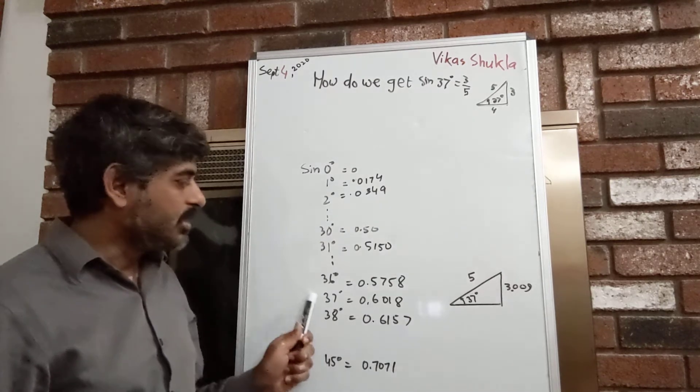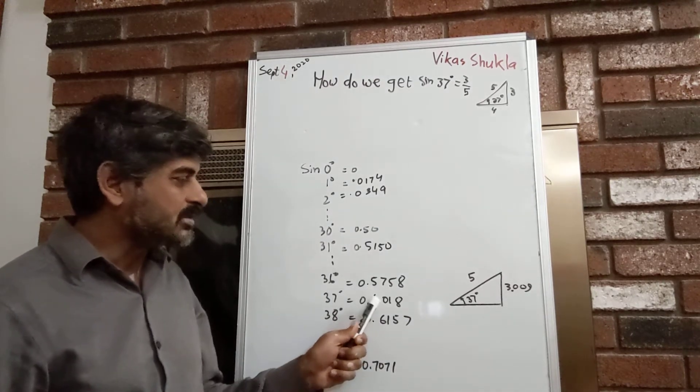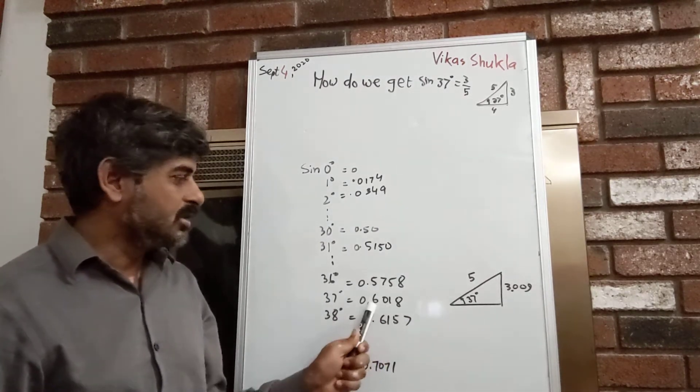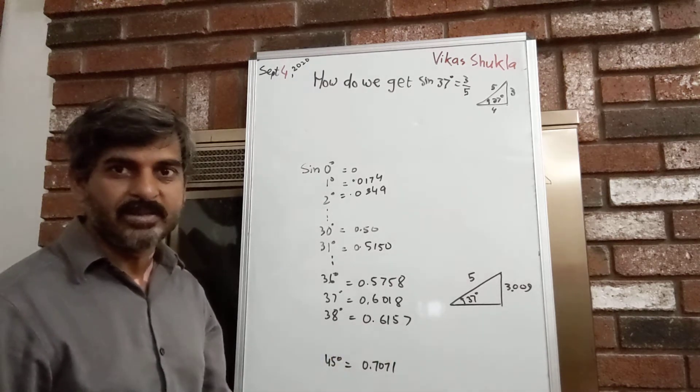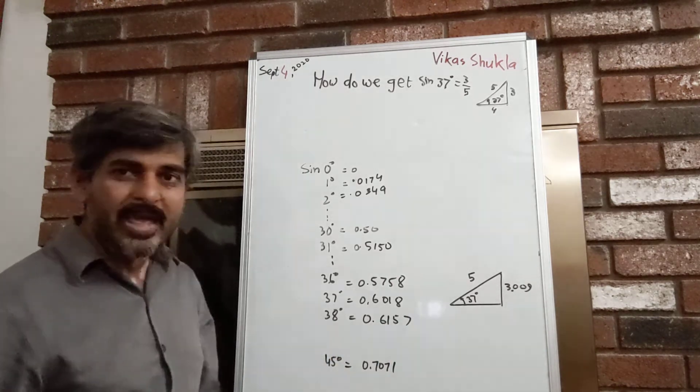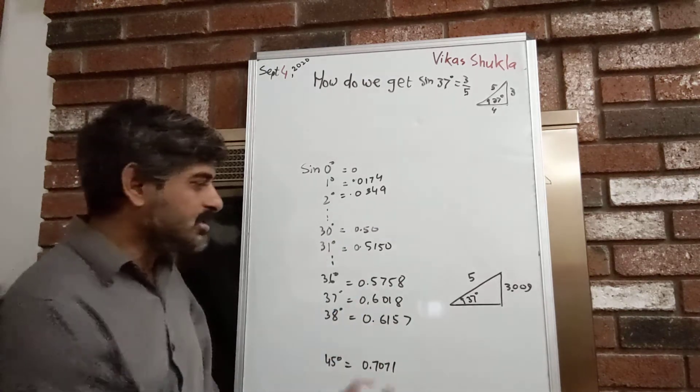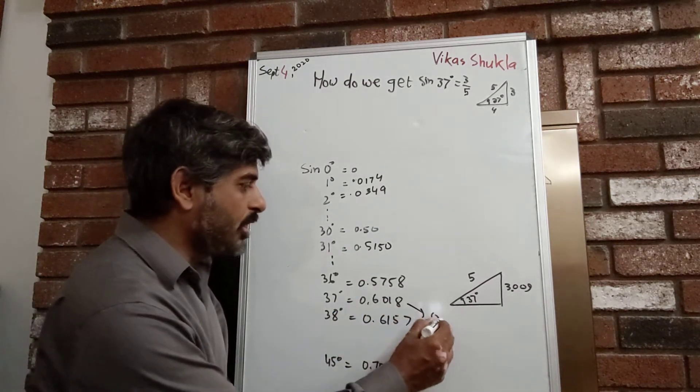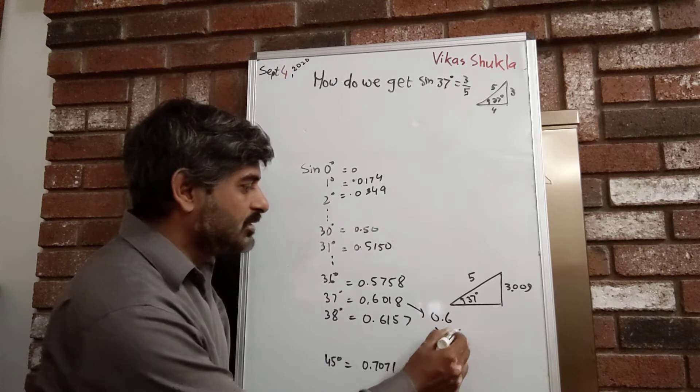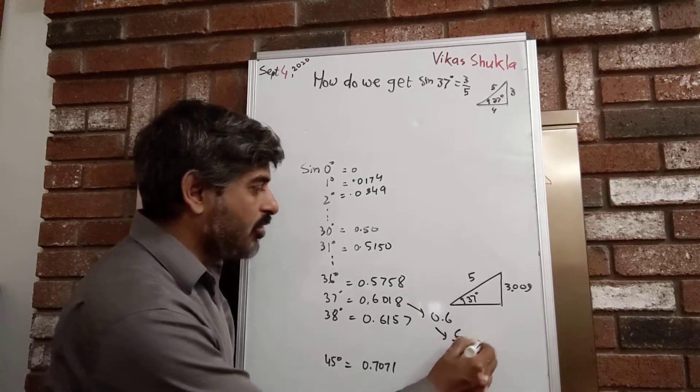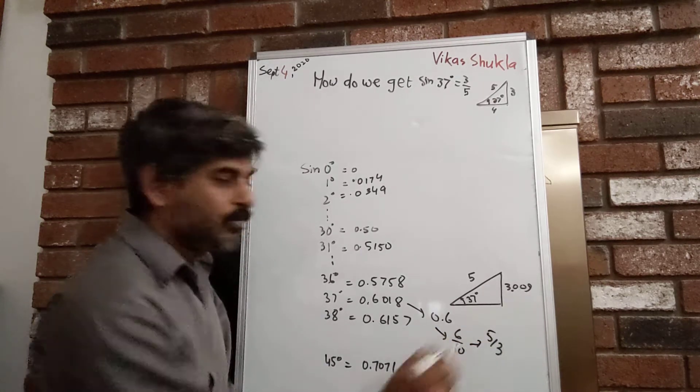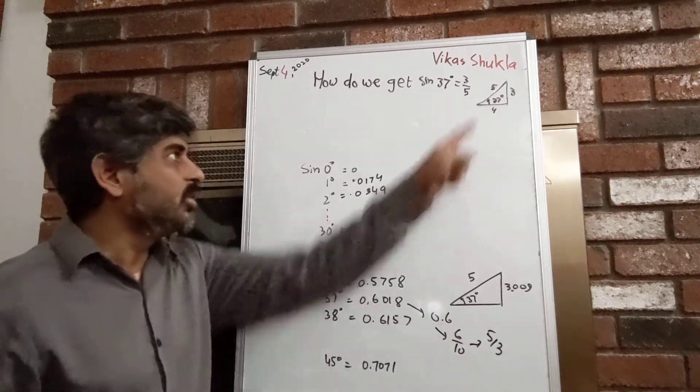...then this value is actually 0.6018. If I round it off, this becomes 0.6, which is 6/10 or 3/5. That is what we show in a triangle with 3 here and 5 here.